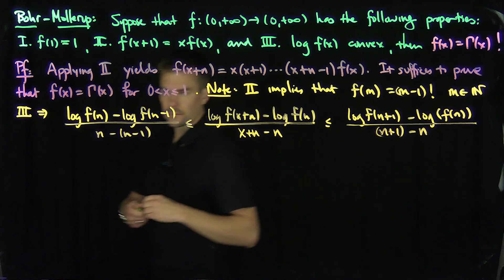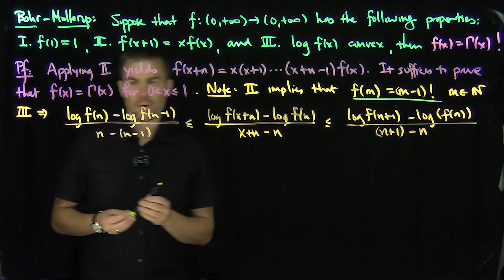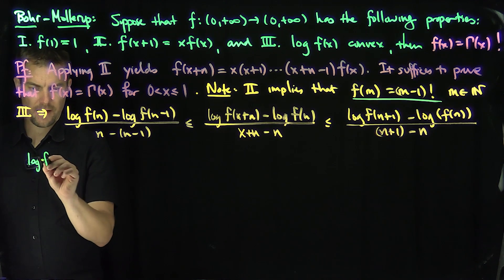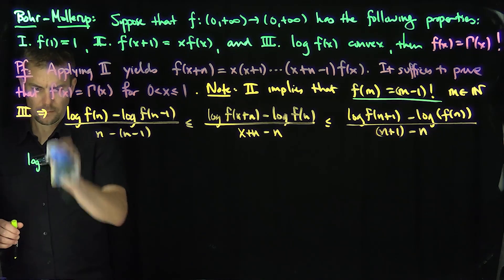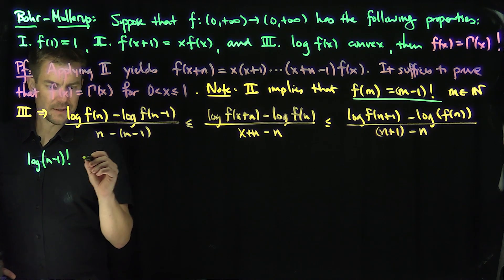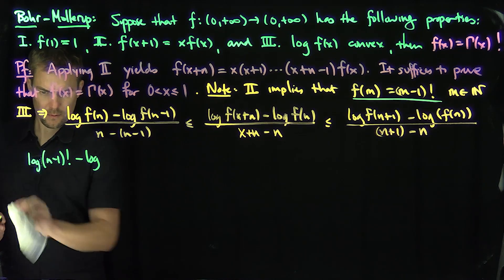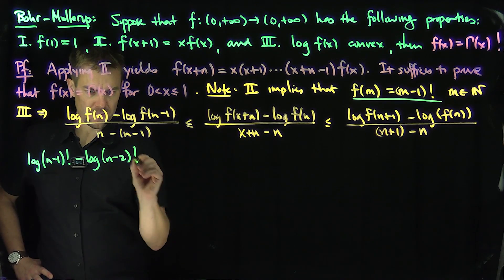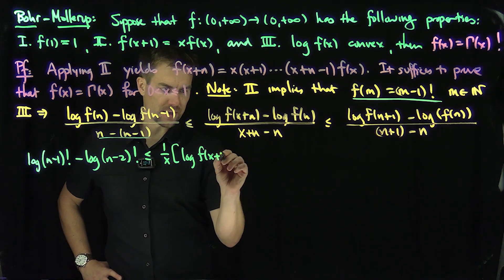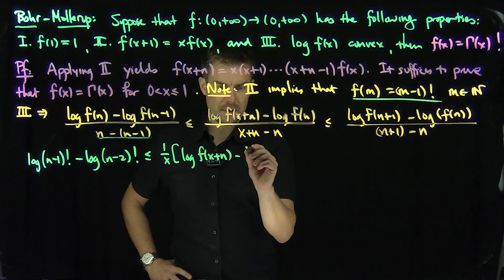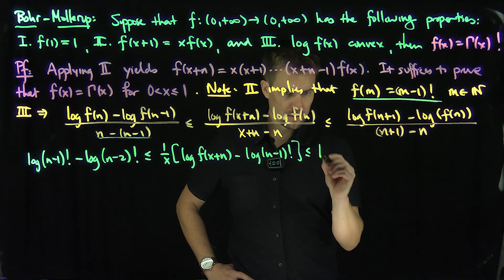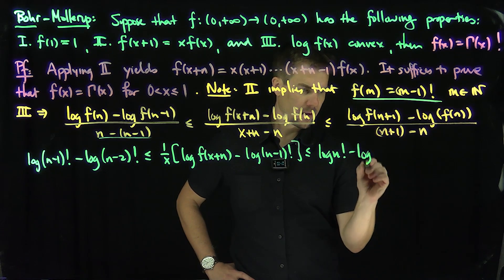Now I'm going to plug in the natural number n into this inequality. On the left we get log of (n−1)! minus log of (n−2)!, which is 1, less than or equal to (1/x)·[log f(x+n) minus log of (n−1)!], less than or equal to log of n! minus log of (n−1)!.